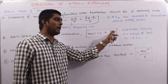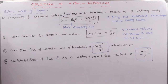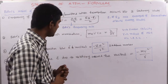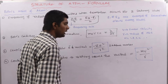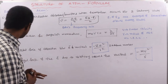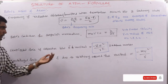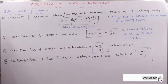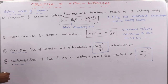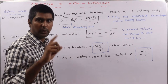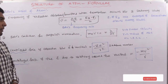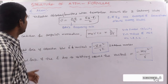The centripetal force of attraction between the electron and nucleus equals −Ze²/r². The centrifugal force of the electron revolving around the nucleus equals −mv²/r. Direct questions on these have been asked in various competitive exams.